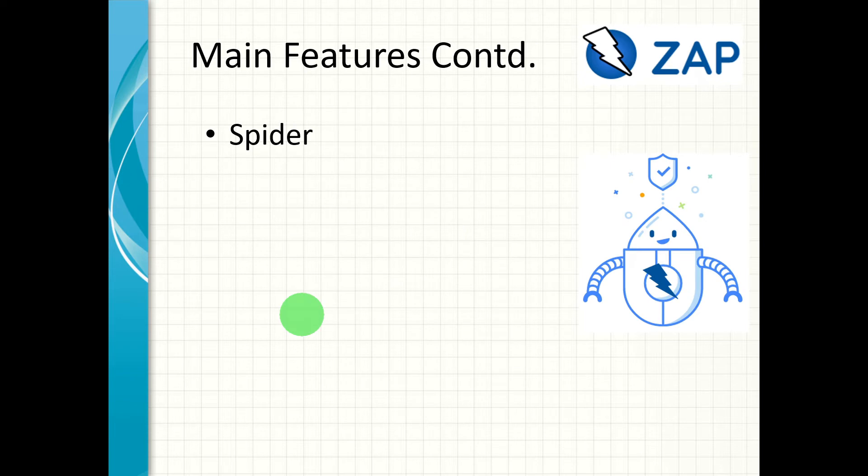The next main feature is the spider. The spider can be used to crawl the application to automatically detect all the links and pages, and then recursively use the links on those pages to discover even more pages.